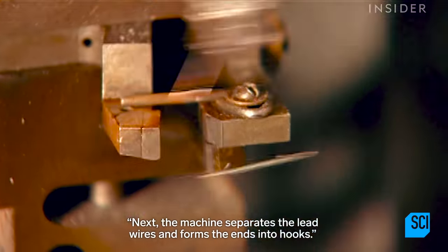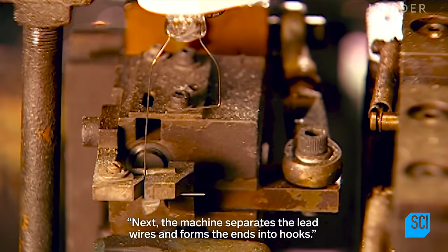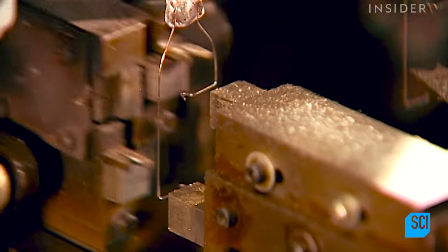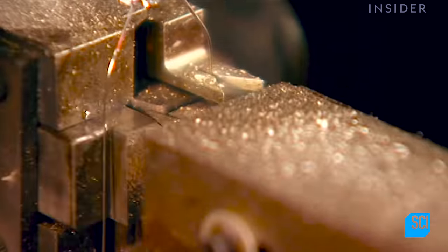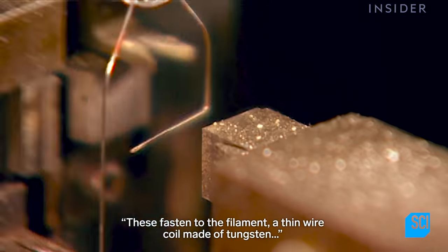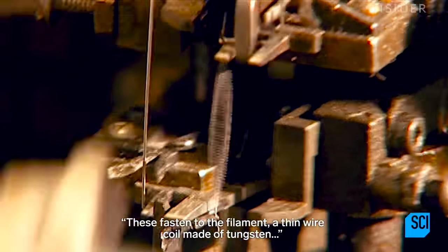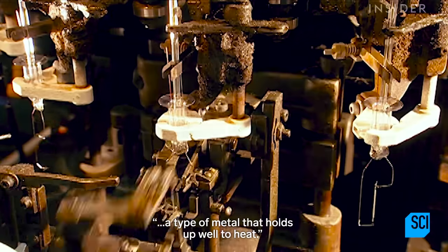Next, the machine separates the lead wires and forms the ends into hooks. These fasten to the filament, a thin wire coil made of tungsten, a type of metal that holds up well to heat.